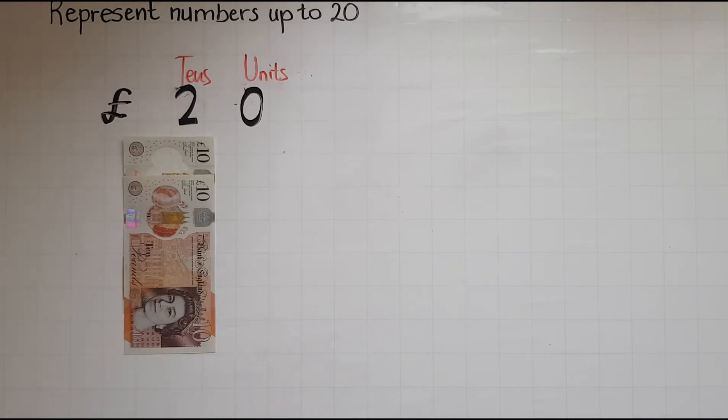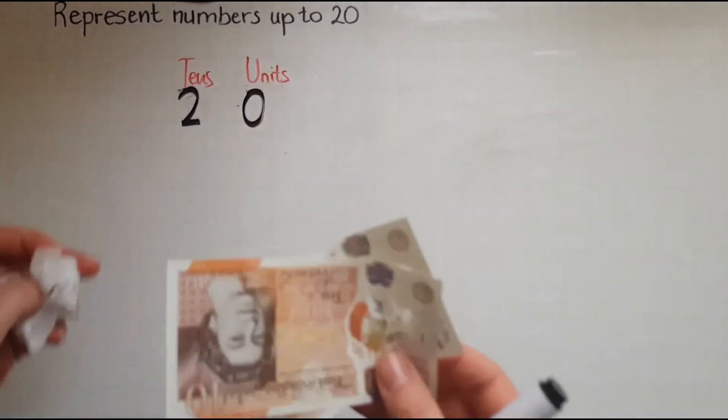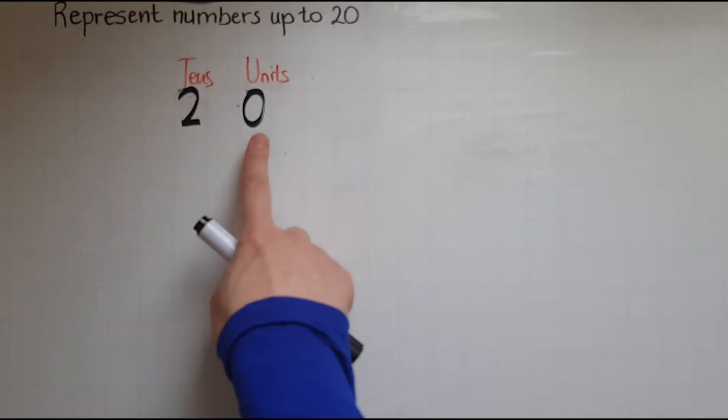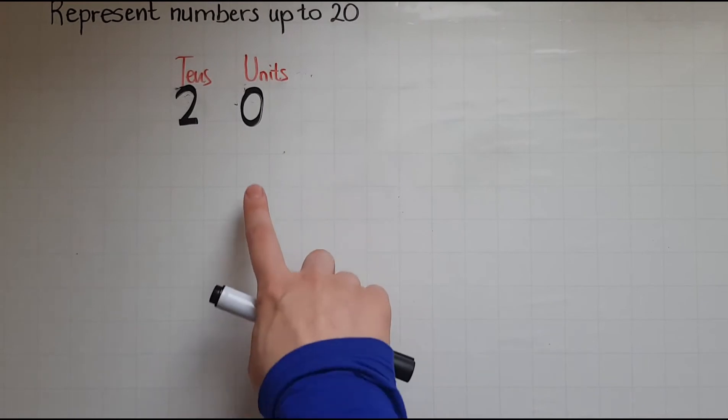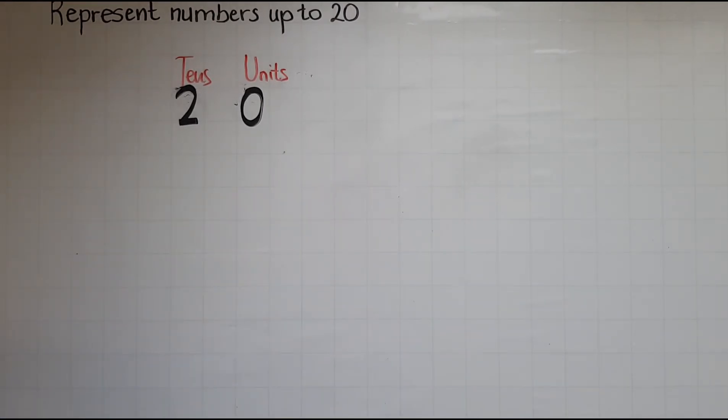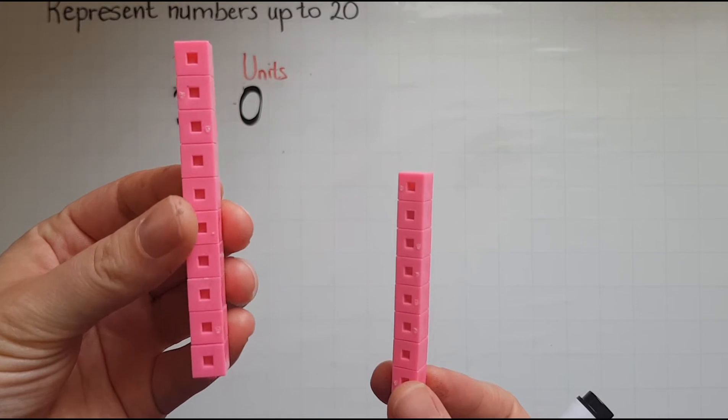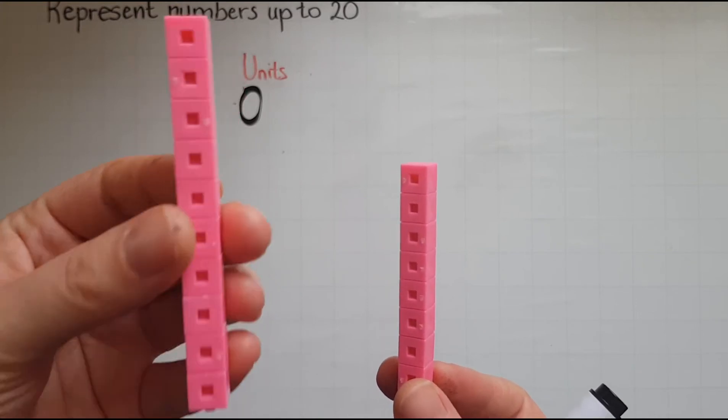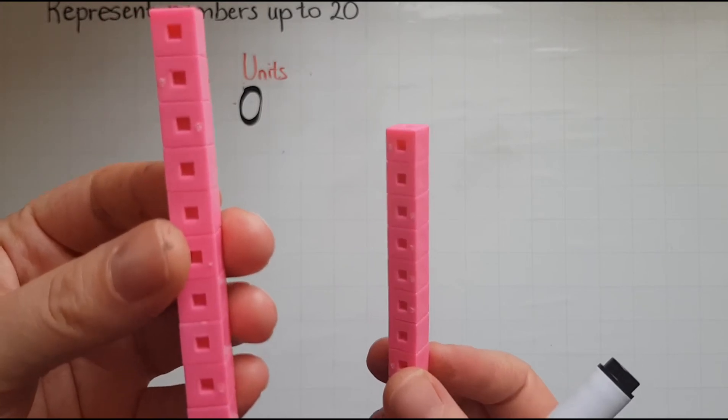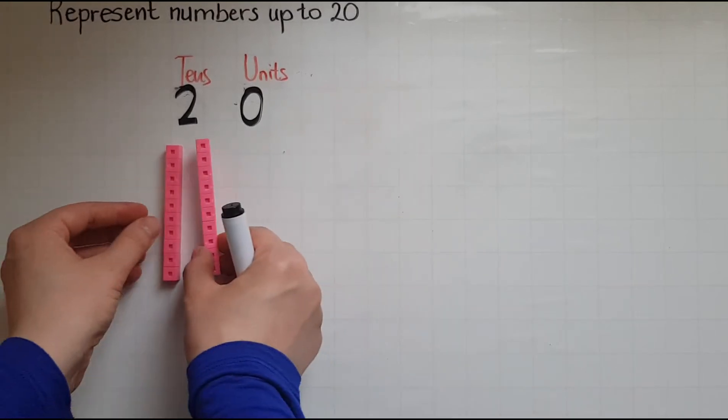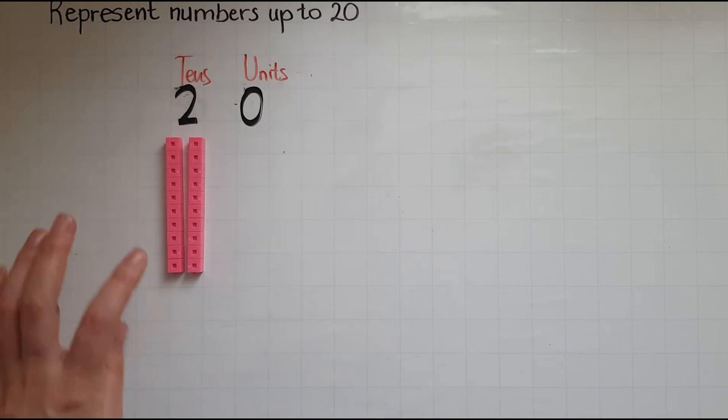I will now do the same thing I've done with money with cubes. So I will take away the pound sign and the money notes. So what do I have? I have no units so I'm not going to put any cubes in here. And I've got two tens. So that's a block of ten and another block of ten. Just like the ten pound note which is made of ten pound coins, this block is made of ten single cubes. So I will put them there. That's two of the tens.